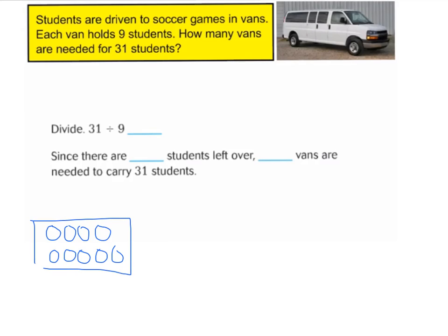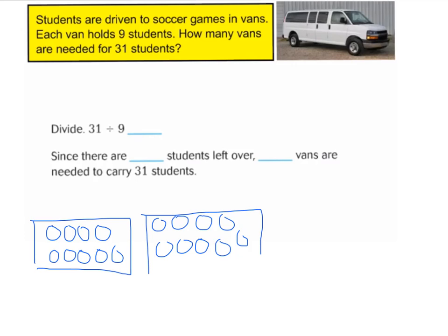Here's one van. We need to get to 31 students, so I count another 9: 1, 2, 3, 4, 5, 6, 7, 8, 9. So I have another van. Now I need to know how many students I have so far. I have 2 vans and there are 9 students in each van — 2 times 9 is 18. I'm not at 31 yet.